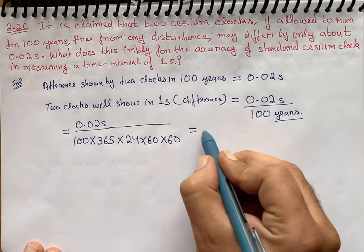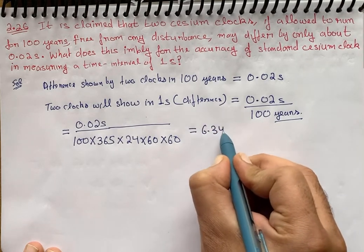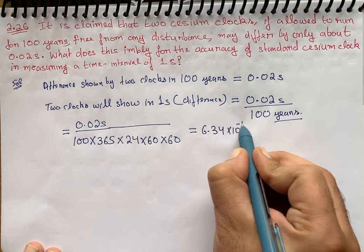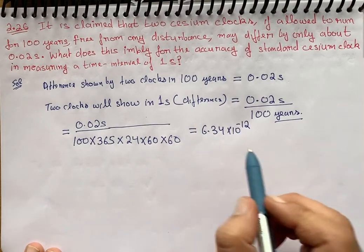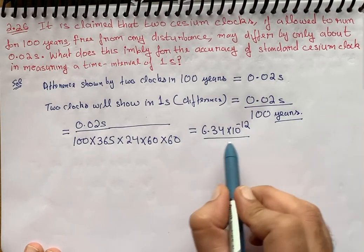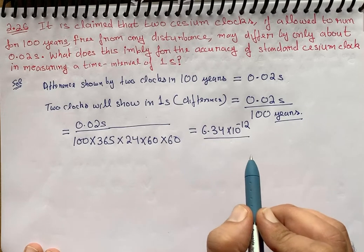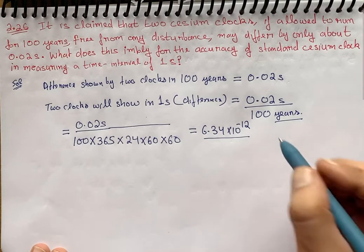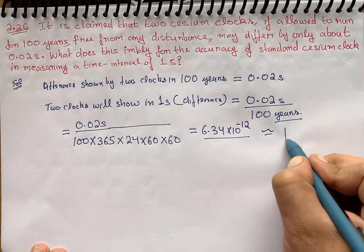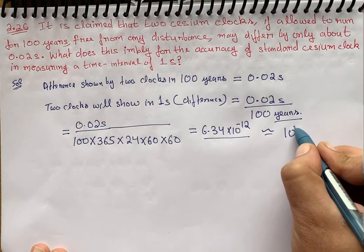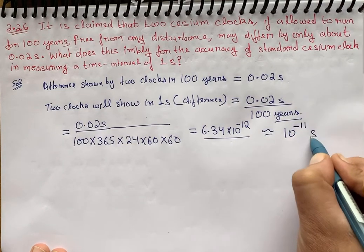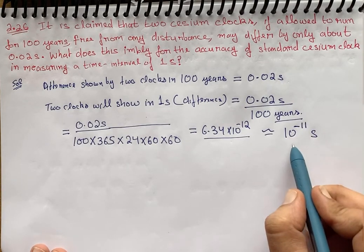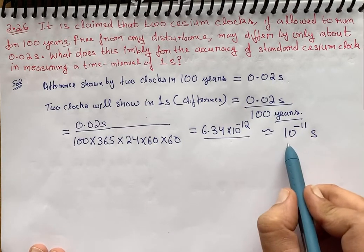After calculation we get 6.34 times 10 raised to power minus 12. So this is the difference per second.